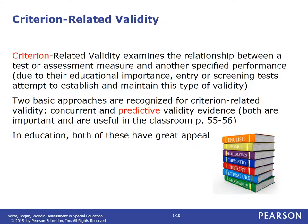We also look at criterion-related validity, which examines the relationship between our assessment and another performance. Things like the SAT or ACT are considered to have concurrent and predictive validity — they are supposed to predict your performance in a college setting. If you are in an elementary classroom, you might have heard of DIBELS — the Dynamic Indicators of Basic Early Literacy. DIBELS has a predictive value: if a student is emerging or at risk, that is predictive of their future performance without interventions, related to a criterion or one part of knowledge.